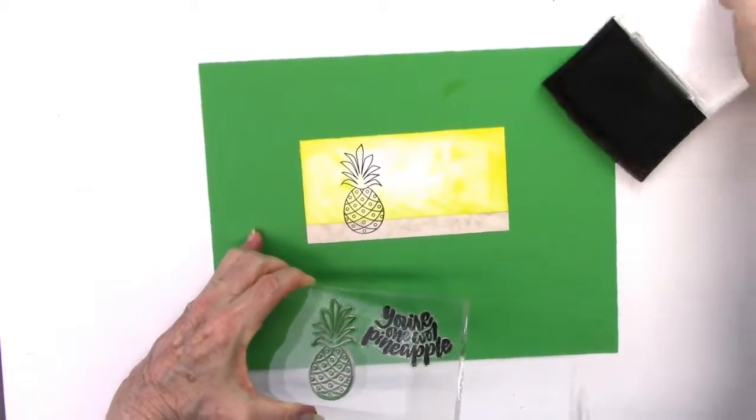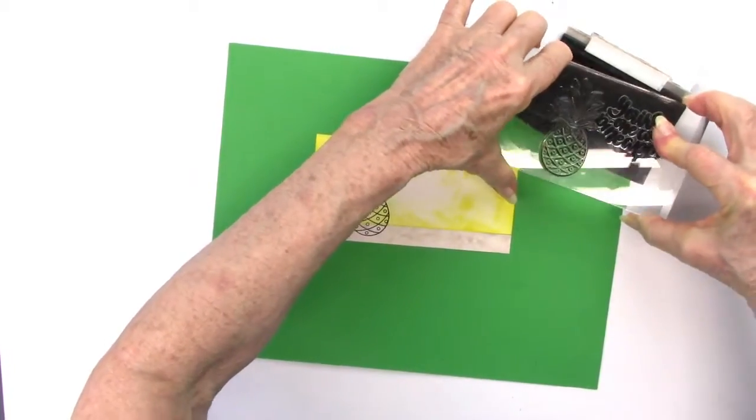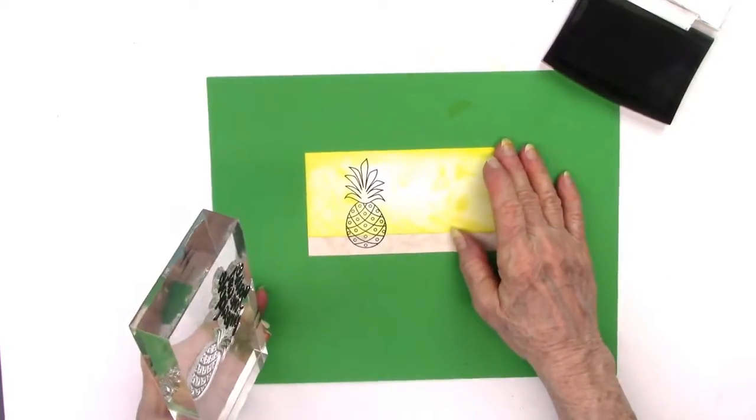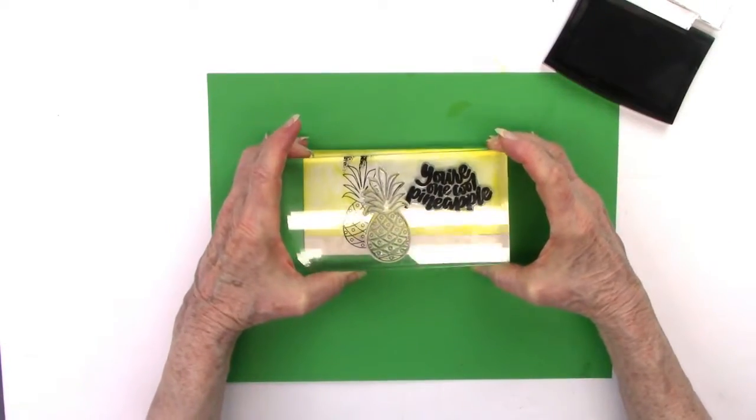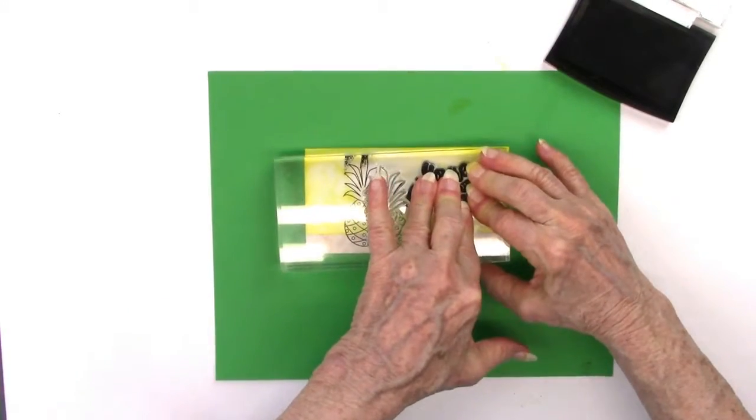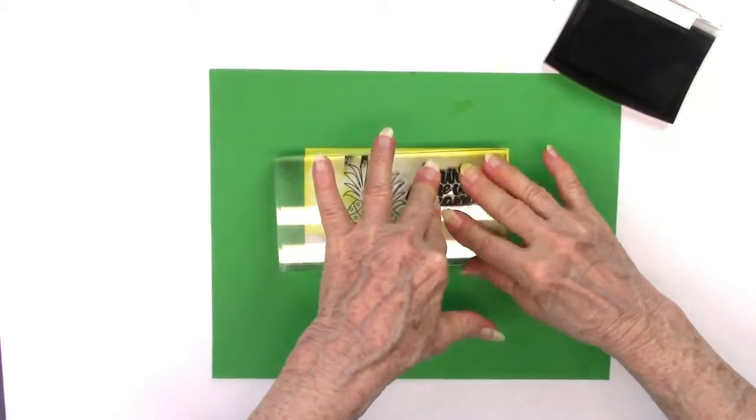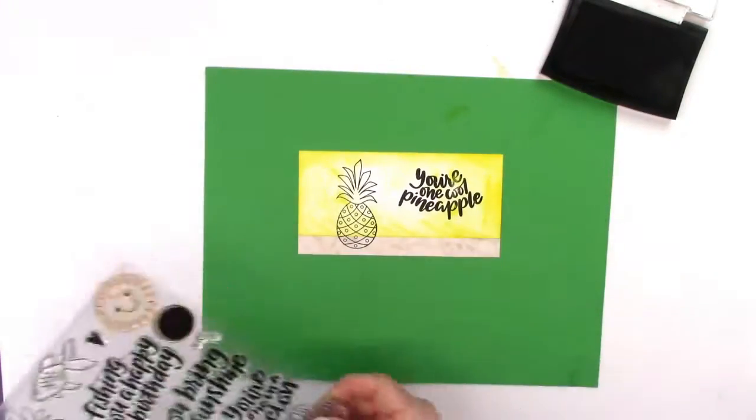And then I stamped with this stamp set that comes in the kit. I did the pineapple first. I had to reconstruct this card because I didn't have enough paper to remake it. So I took different parts apart and I'm putting back together again. But this is how I stamped this. And then I used the sentiment which says you're one cool pineapple.